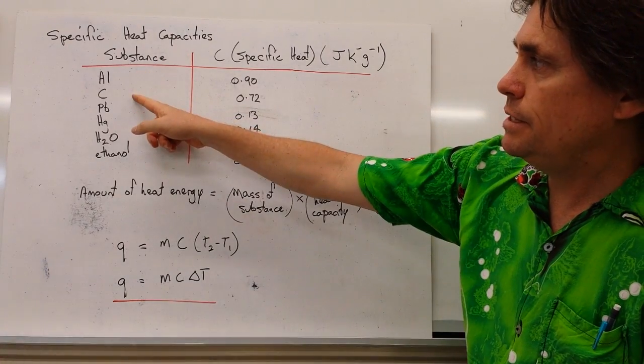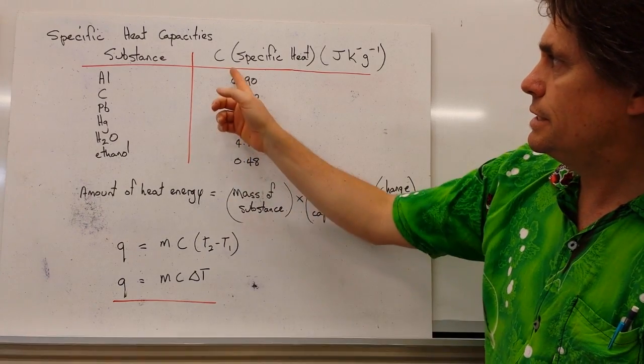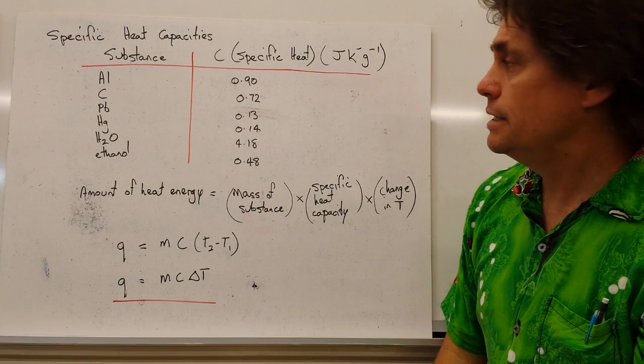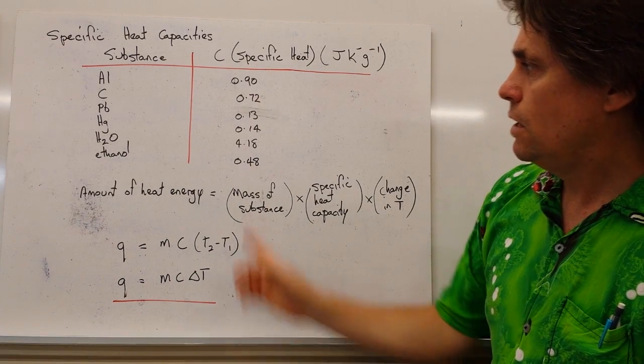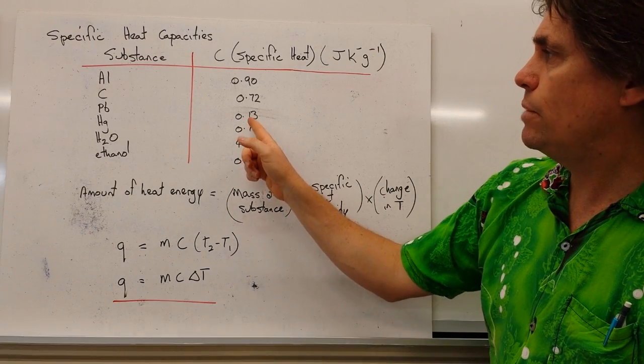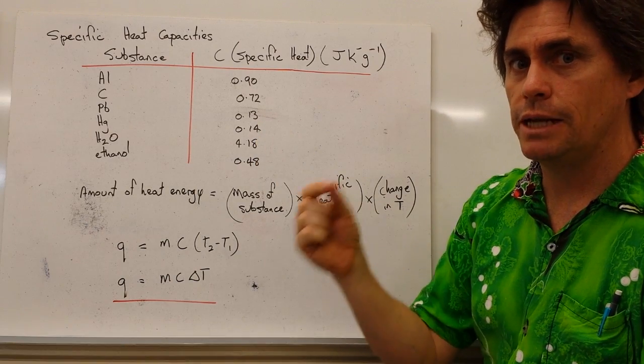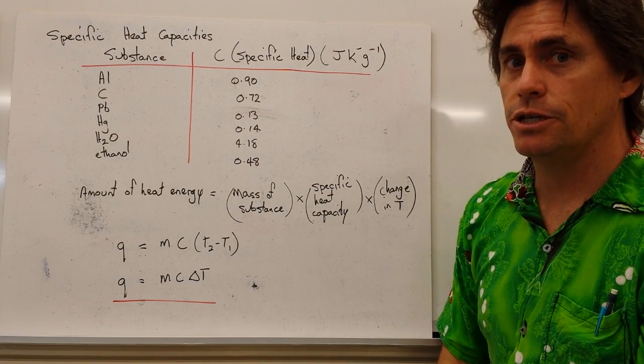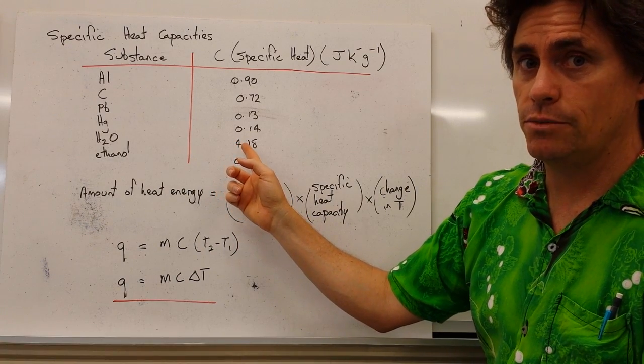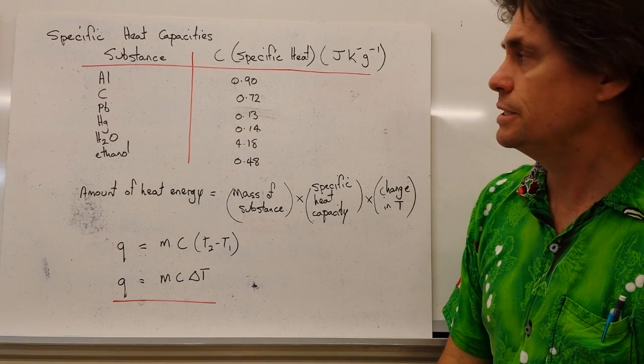So with this definition in mind, we can actually look at the specific heat capacities of various substances. We've got aluminium, carbon, lead, mercury, water and ethanol. And we see that their specific heat capacities, which we denote with the letter C, changes significantly. On the one hand, we've got water with a very high specific heat capacity compared with lead and mercury. So lead and mercury are able to absorb a little bit of heat and change temperature quite rapidly. On the other hand, water, and it's no surprise that we're 70% water because water can absorb a lot of energy without changing temperature significantly.